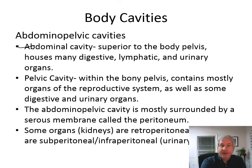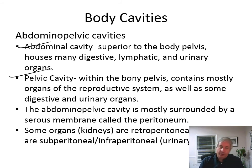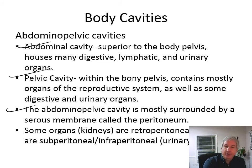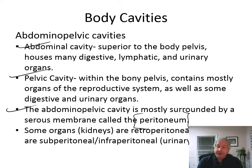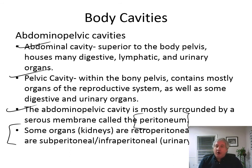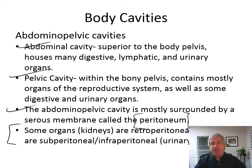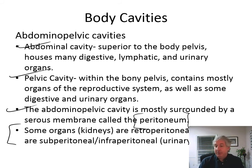The abdominal pelvic cavity is mostly surrounded by a serous membrane called the peritoneum. You might have heard of peritonitis — that's inflammation of the peritoneum. Some organs are actually behind the peritoneum — they're called retroperitoneal, on the back wall of the body. Some organs are subperitoneal or infraperitoneal, meaning below the peritoneum — the urinary bladder would be one of those.